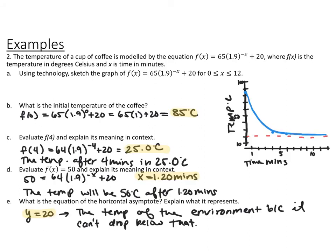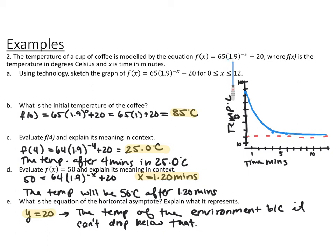Here is the sketch of the graph from the graphing calculator for x from 0 to 12. Time in minutes is on the x-axis and temperature in degrees Celsius on the y-axis, scaled by 10s. Notice that even though the base 1.9 is greater than 1, it's still a decreasing or decay function because of the negative in the exponent, which reflects it across the y-axis. Applying the negative exponent, it's really 1 over 1.9 as the effective base, which is why it's decay even though a is bigger than 1.